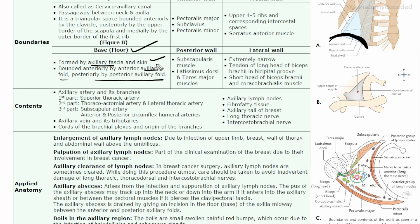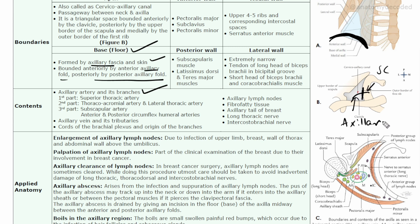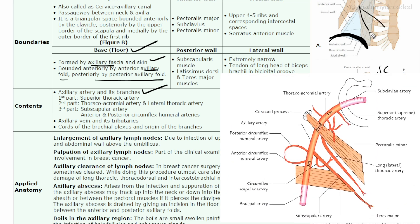The contents of the axilla include the axillary artery and its branches. The subclavian artery, when it crosses the outer border of the first rib, changes its name to the axillary artery. It has three parts, divided by the pectoralis minor muscle: the first part is proximal to pectoralis minor, the second part is behind it, and the third part is distal to it.